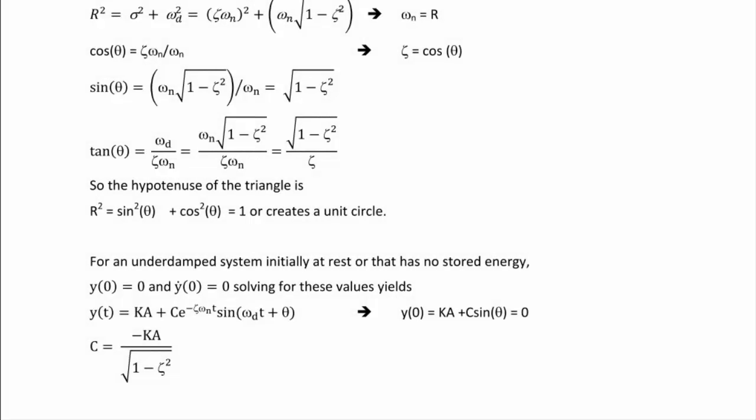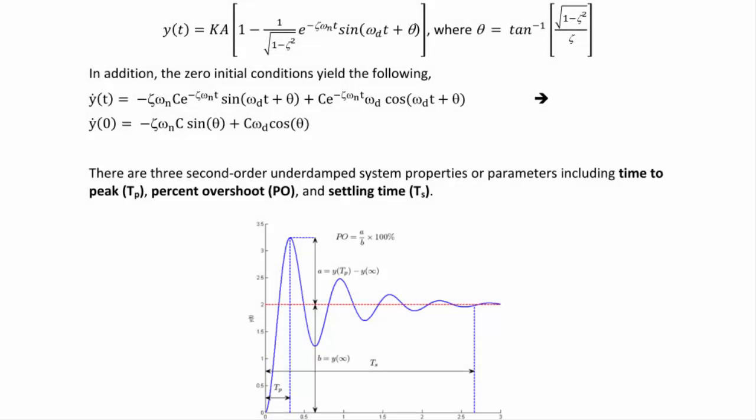For an underdamped system initially at rest — y(0) = 0 and ẏ(0) = 0 — the response is y(t) = ka + ce^(−ζωₙt) sin(ωdt + θ). Applying y(0) = 0 gives c = −ka/sin θ = −ka/√(1 − ζ²). Substituting back, y(t) = ka[1 − (1/√(1 − ζ²))e^(−ζωₙt) sin(ωdt + θ)], where θ = arctan(√(1 − ζ²)/ζ).